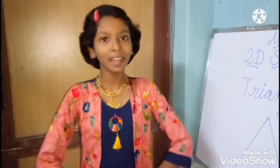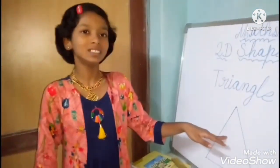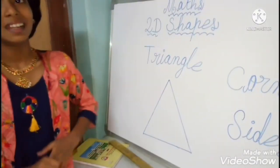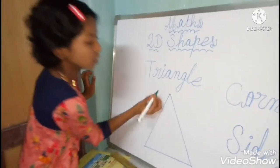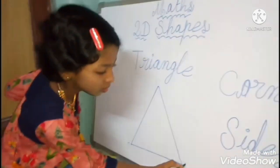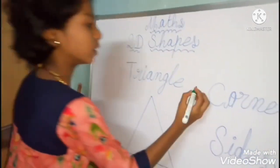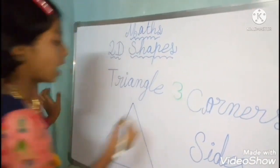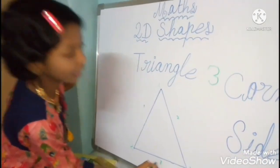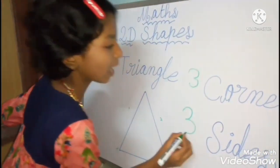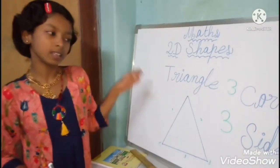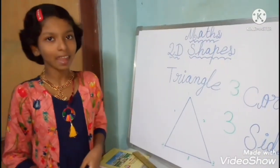Now I have drawn here one shape. This shape name is triangle. Triangle has one, two, three — three corners. And one, two, three — three sides. Triangle has three corners and three sides.